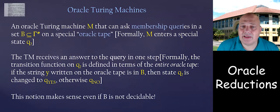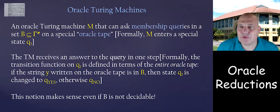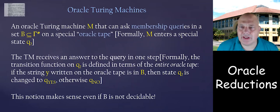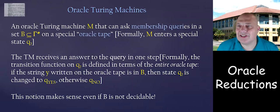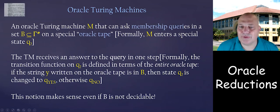The key point is that this notion makes mathematical sense regardless of the hardness of B — even if B is not decidable. The powers we grant are essentially magical: B can be any set you want.